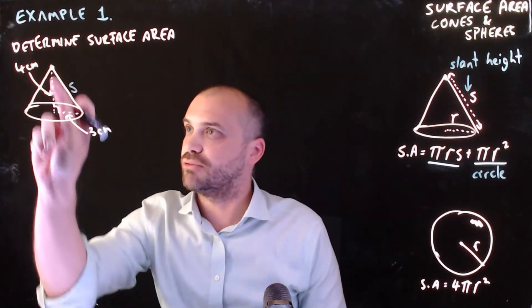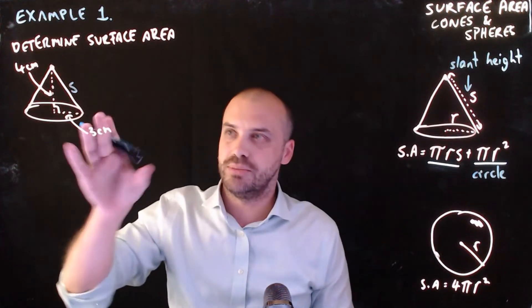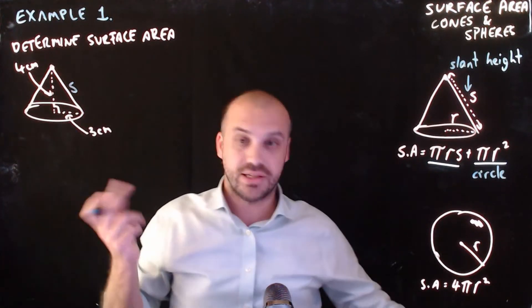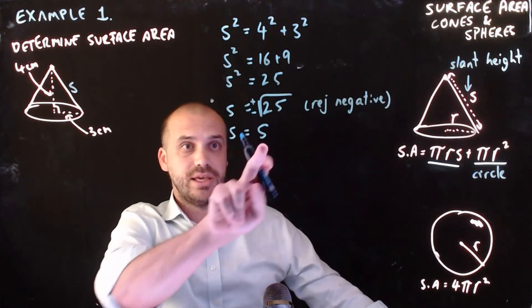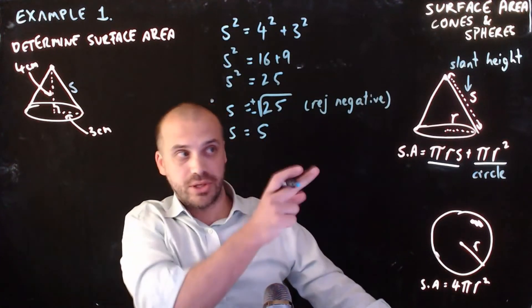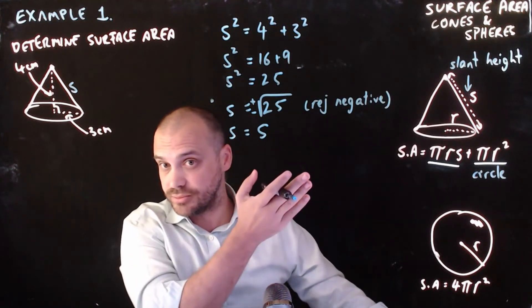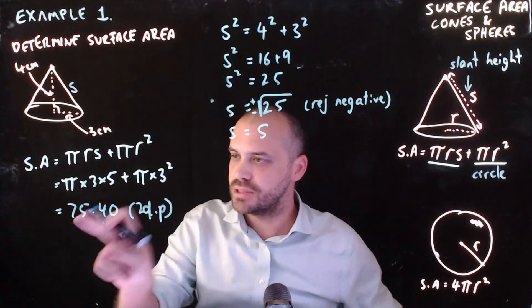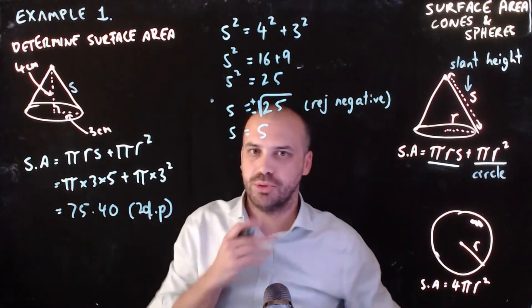Now of course you can see a right angle triangle here, so we can use Pythagoras' theorem to find out what S is. So relatively straightforward there, Pythagoras' theorem, S equals 5. So now that we know what S is, we can just define the surface area using that formula. So formula, numbers, answer, 75.40 to 2 decimal places.